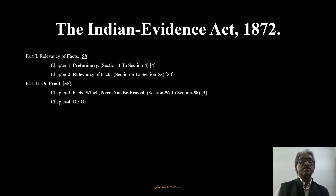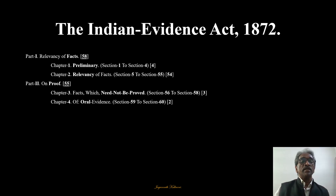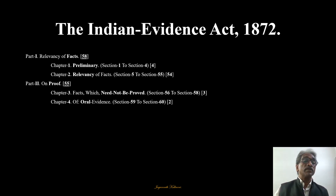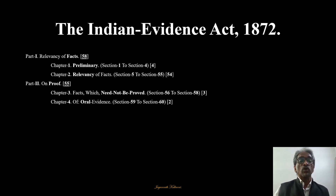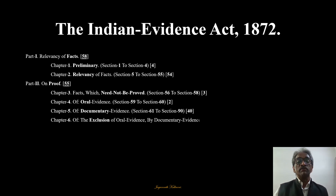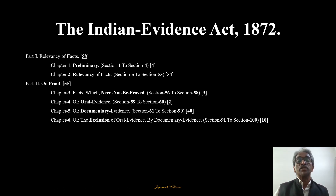The Act is divided into three parts. The first part is about the relevancy of facts, which covers 58 sections, under which chapter 1 is preliminary from section 1 to section 4, and chapter 2 talks about the relevancy of facts from section 5 to section 55. The second part talks about proof, which covers 55 sections, in which chapter 3 covers facts which need not be proved from section 56 to section 58, chapter 4 covers oral evidence from section 59 to section 60, chapter 5 covers documentary evidence from section 61 to section 90, and chapter 6 covers exclusion of oral by documentary evidence from section 91 to section 100.